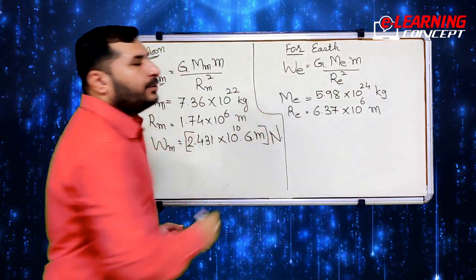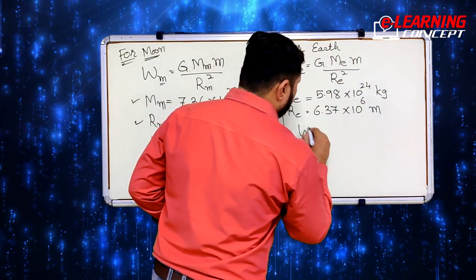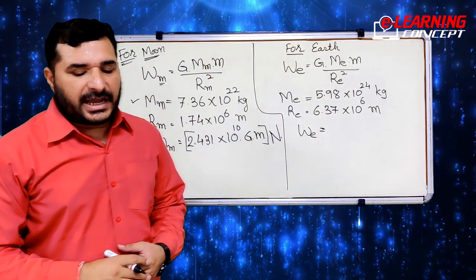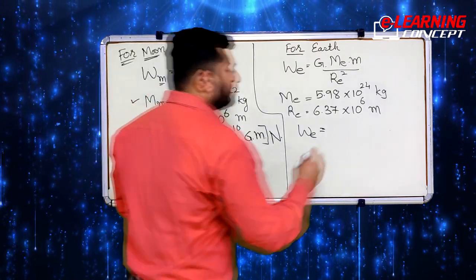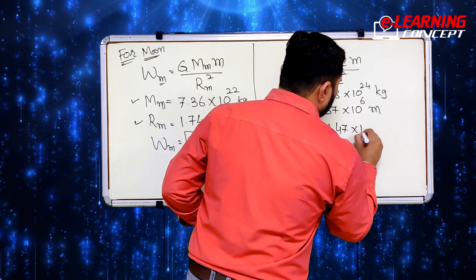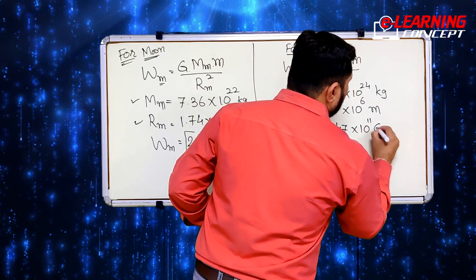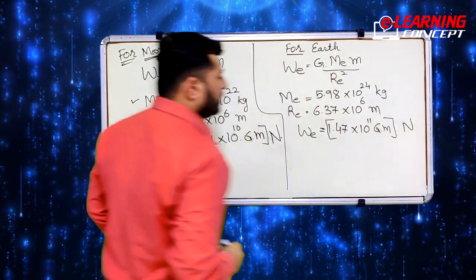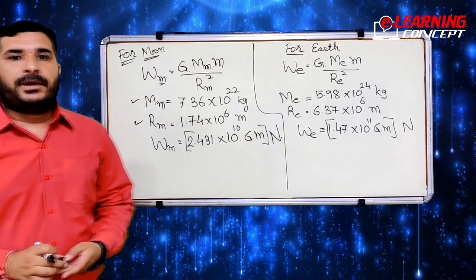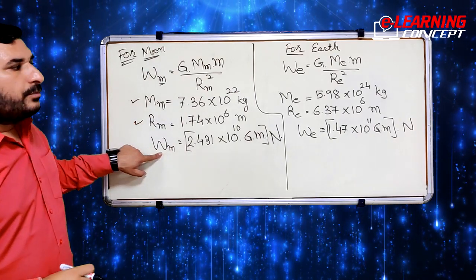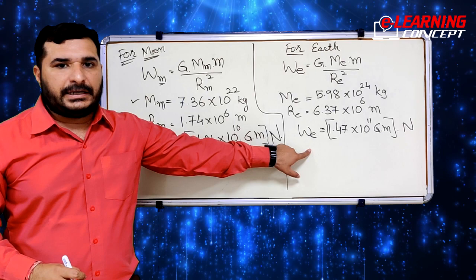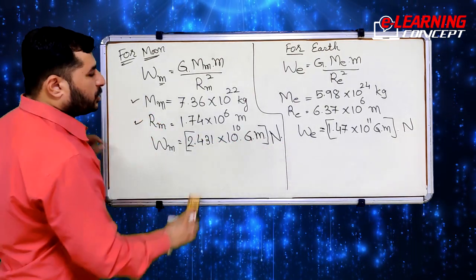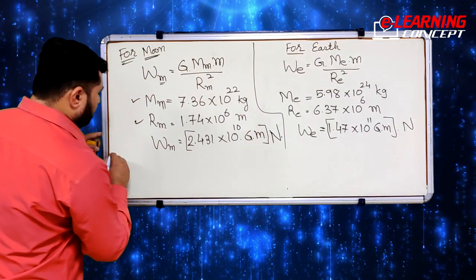Substituting these values, the weight of the object on Earth comes out to be W_e = 1.47 × 10¹¹ × G × m Newtons. So we have found the weight of a single object on both the Moon and the Earth. Now we need to compare them, so we will take their ratio.